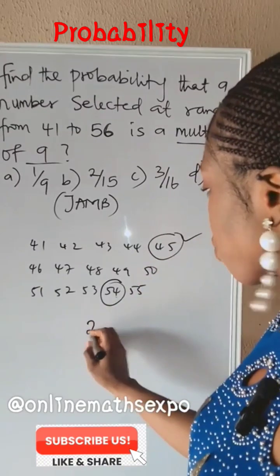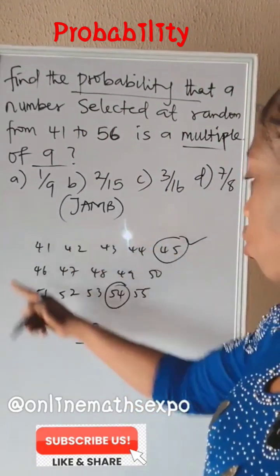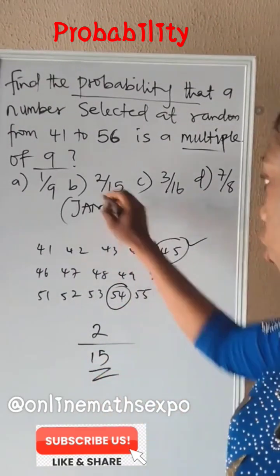So it is only 2 numbers. So we have 2. For probability, it's 2 over the total number. The total number we have here is 15. So it will be 2 over 15, and that's option B.